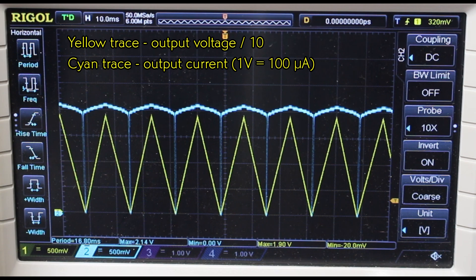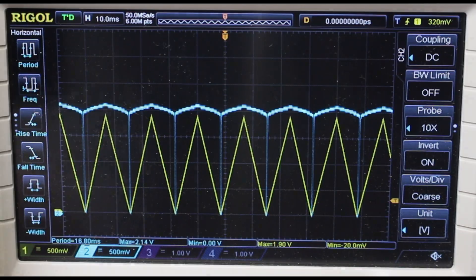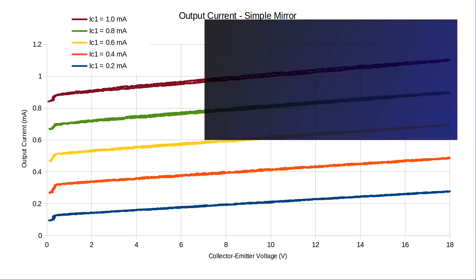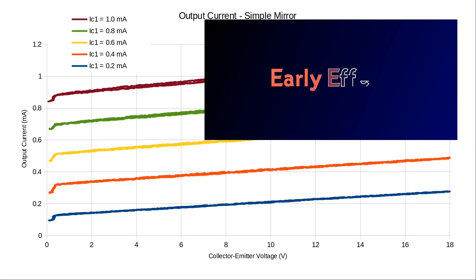Let me collect the traces for a variety of programming currents, and plot them all together. Well, that didn't work out ideally. The general trend is right. As the programming current goes up, so does the output current. But there's quite a dependence on the output voltage.